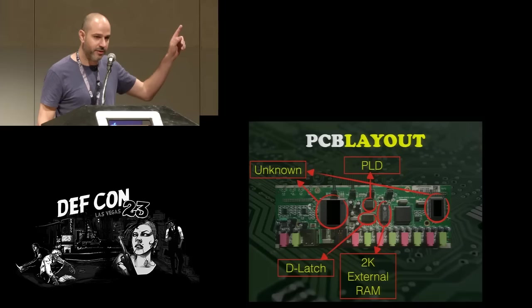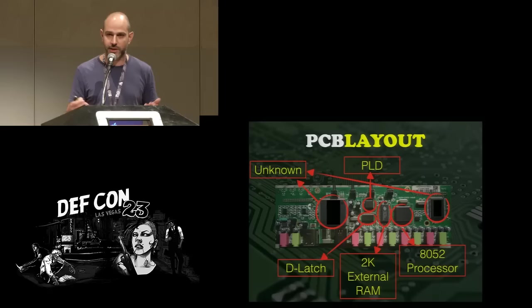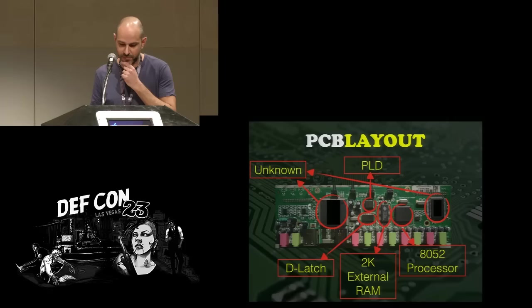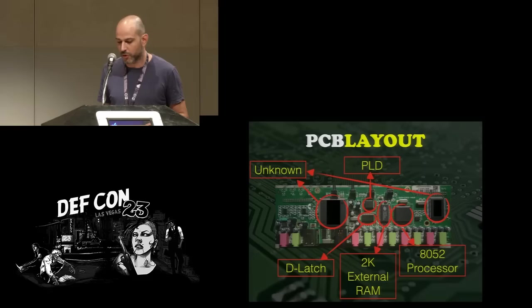That's an 8052 processor. For those not familiar, the 8052 is kind of the advanced version of the 8051 — it's an Intel-based chip that runs Intel 8051 assembly, which is a pretty easy assembly to learn. This is really common in the embedded world; you can find these chips anywhere from toasters up to space shuttles, it's that versatile.